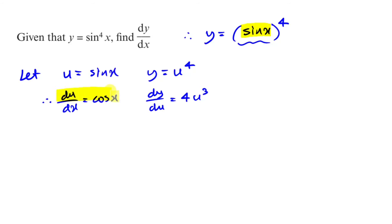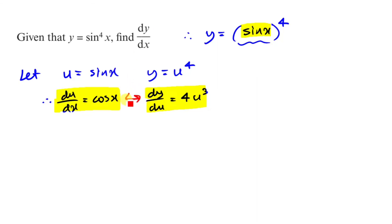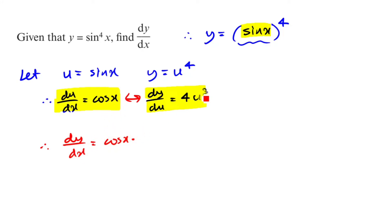As always with the chain rule, you multiply these two last bits together — that's how it always works. So the final result, dy over dx, is going to equal cos x times 4u to the power of 3.